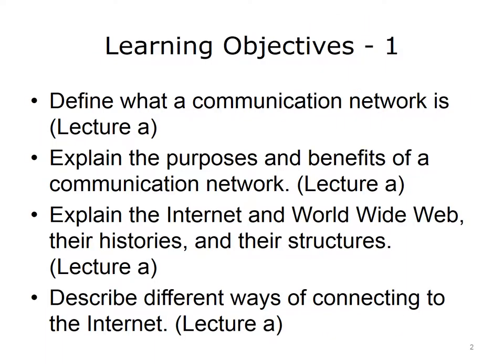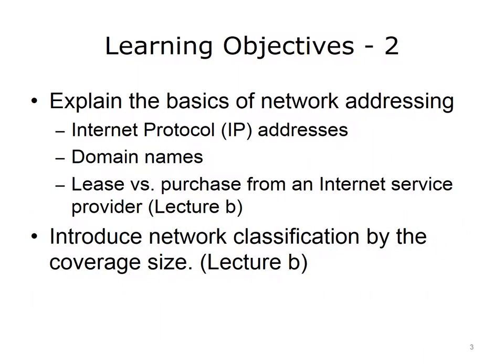The objectives for this unit on networks are to define what a communication network is, explain the purposes and benefits of a communication network, explain the Internet and World Wide Web — their histories and their structures, describe different ways of connecting to the Internet, explain basics of network addressing, IP addresses and domain names, and how they can be leased or purchased from an Internet service provider, and introduce network classification by coverage size.